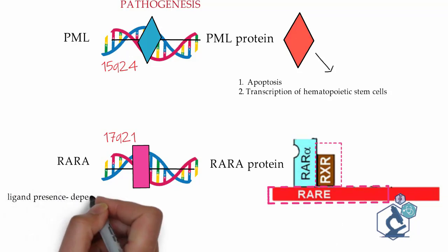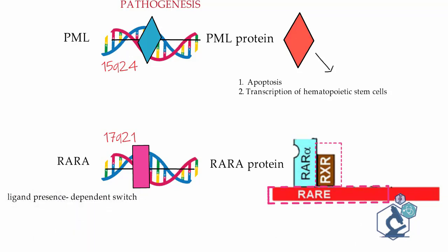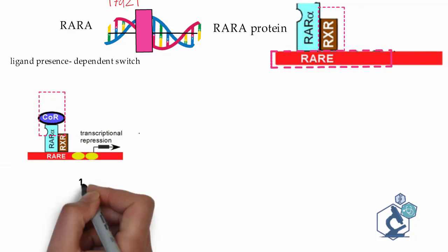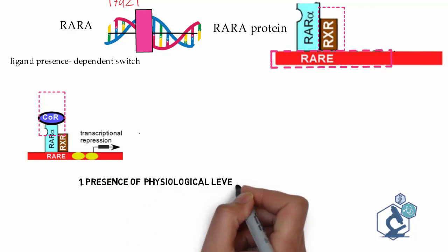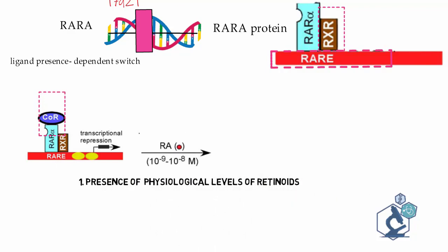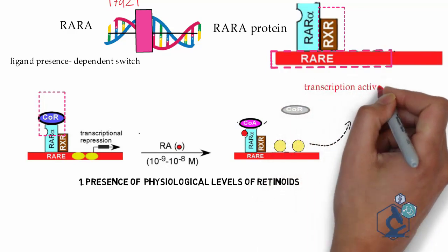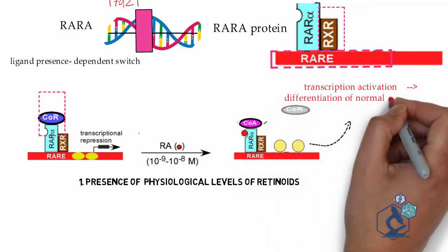This unit together functions as a ligand-dependent switch. Under normal conditions, in the absence of retinoic acid, these heterodimers recruit repressor molecules, which silence transcription. However, in the presence of physiological levels of retinoids, the retinoids combine with the RAR heterodimers, release the repressors, and recruit co-activators, resulting in acetylation of protein and activation of transcription, causing differentiation of myeloid cells up to neutrophils.